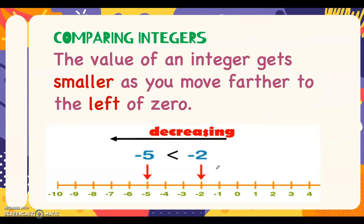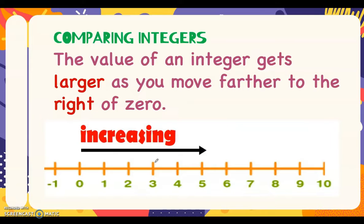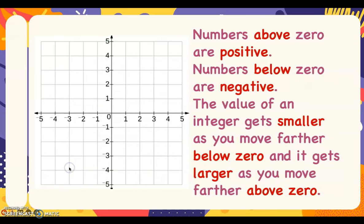Positive integers are greater than negative integers. Now let's compare integers. The value of an integer gets smaller as you move farther to the left of zero. For example, negative 2 is bigger than negative 5 since negative 2 is closer to zero. As you move farther from zero to the left, the value decreases. On the other hand, as you move farther to the right of zero, the value becomes larger — from zero we have counting numbers from 1 to infinite.